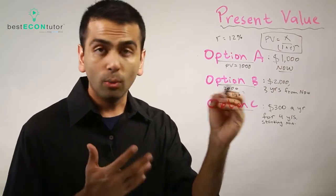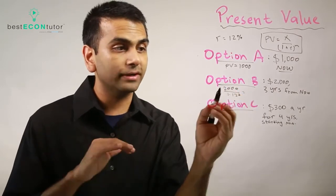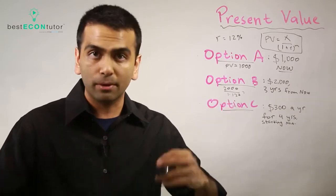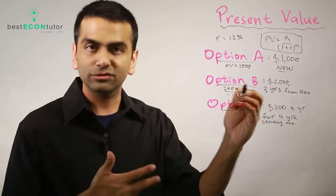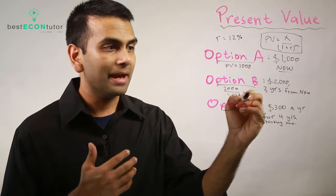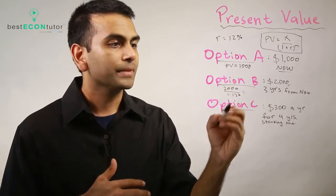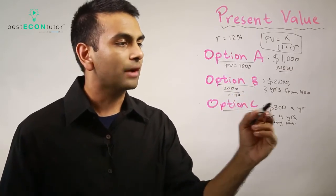So whatever that is, notice it's not obvious. We already know that's going to be less than two thousand because you're dividing by a number bigger than one, but it's not obvious what that number is. So you do the math and you'd be able to find that. And then for Option C,